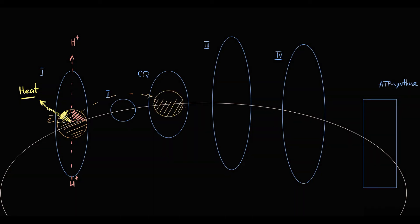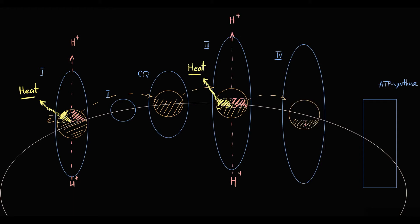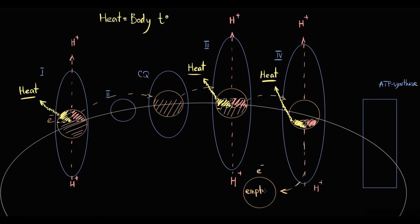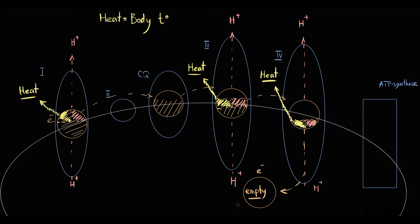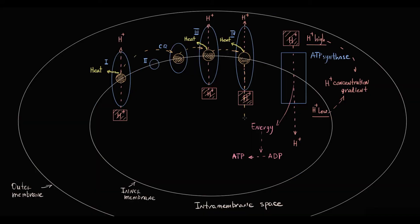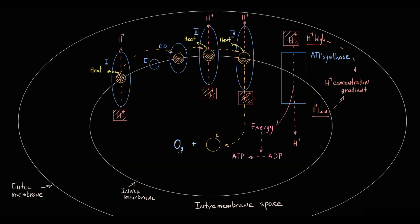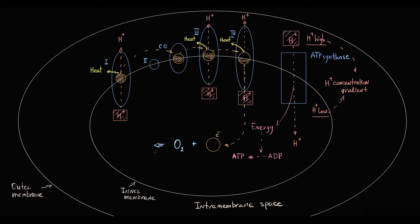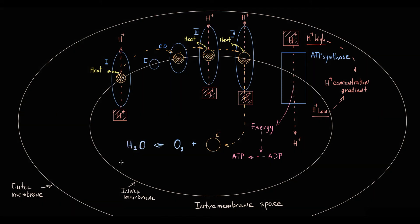The electron complexes suck the energy out of electrons one after another until the electrons are completely energy-depleted. After complex 4 sucks the last portion of energy out of an electron, that electron has no energy left inside. Such an electron is a wasted material with no value for the electron transport chain. Complex 4 then throws out this low-energy electron from the electron transport chain to oxygen inside the mitochondrial matrix, where the electron binds to oxygen and reduces it, forming water molecules. Basically, the electron transport chain is a slaughterhouse for electrons.